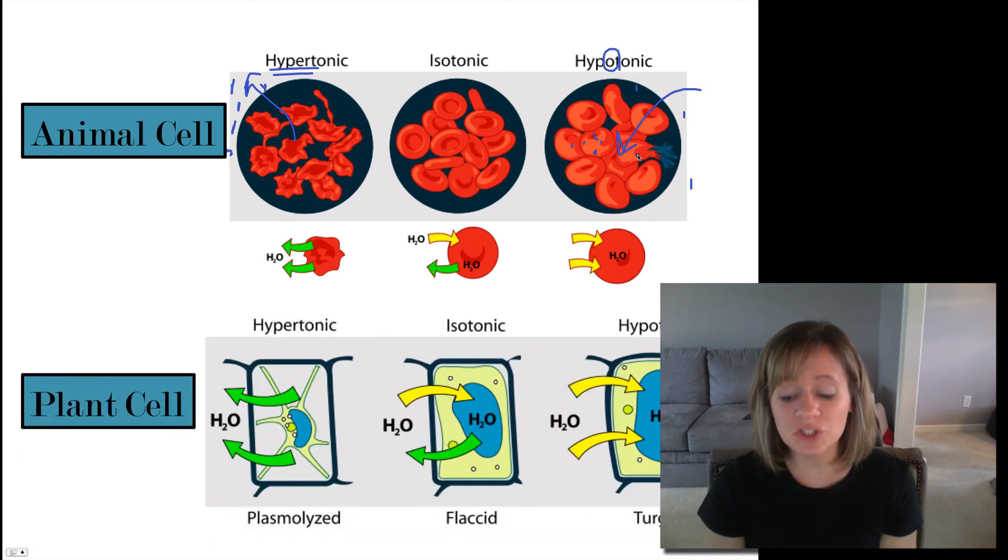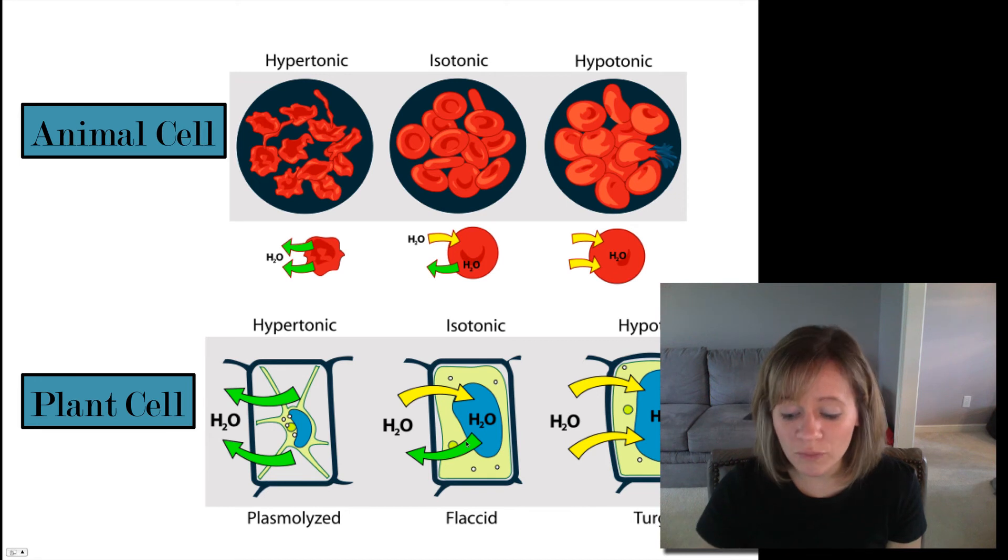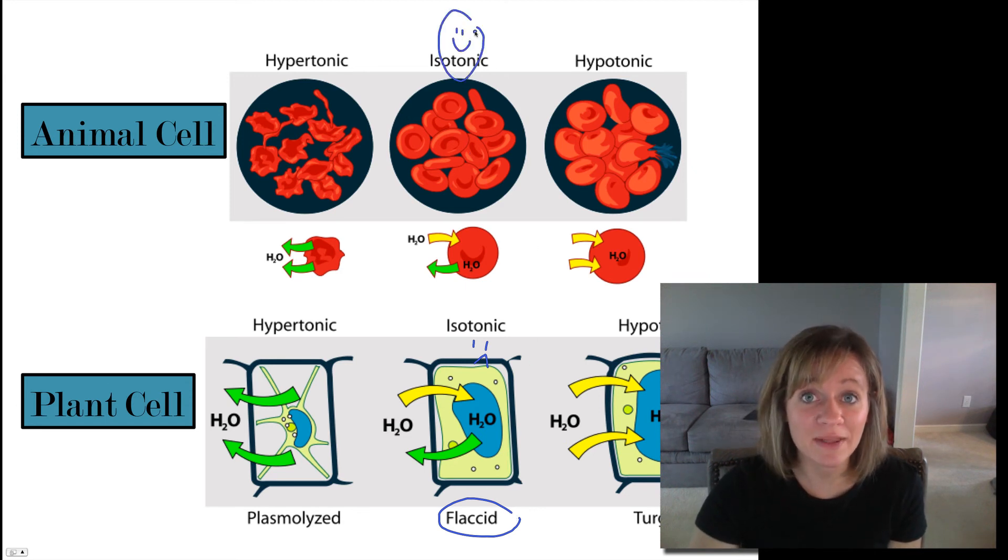In a plant cell, the situation is a little bit different. So in an isotonic environment, there's no net water movement. But you know what? The plant cell doesn't really like this. It's not happy like this. We call this being flaccid. So if you left celery out on the counter overnight, that would be limp or flaccid. But animal cells actually like to be isotonic. They're happy there.